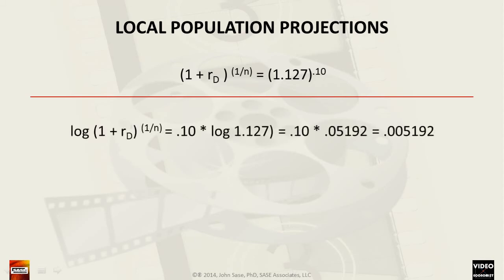Next, we take the log of this exponential function. This gives us the expression of the quantity 1 over N times the log of the quantity of 1 plus R sub D. In our example, this equals 0.1 times 0.05192, which in turn equals 0.005192.